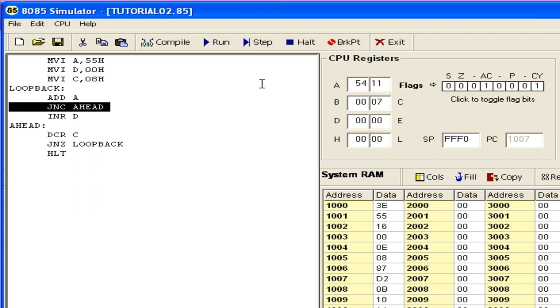Let us go into the second iteration now. So when you multiply this AA by 2, we get 54 and the count goes in the, sorry, the MSB goes in the carry flag. Now since the MSB is 1, so it is to be counted and therefore this will execute the next step. Increment the value of D. So D has become 1. It is counted. Then decrement the value of C. It has become 6 and go ahead.